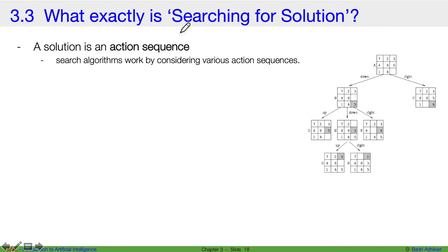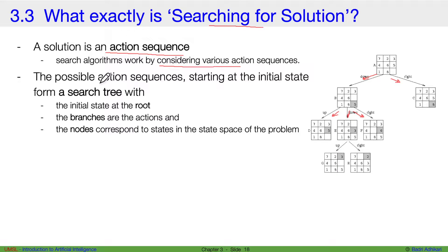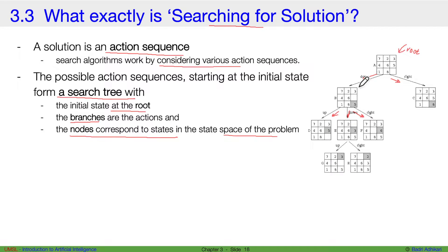Let's discuss what exactly we mean by searching for a solution. As we discussed earlier, a solution is an action sequence. Search algorithms work by considering various actions. The possible action sequences, starting at the initial state, form something known as a search tree, where the initial state of the tree is the root — it's like an inverted tree. The branches are actions, and the nodes correspond to states in the state space of the problem. This root node leads to possible actions, and each outcome of an action is another state, forming the search tree.